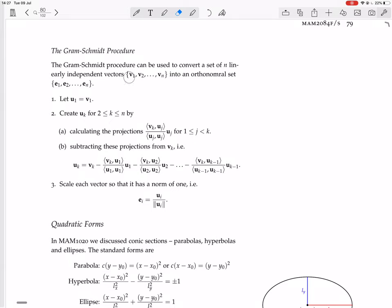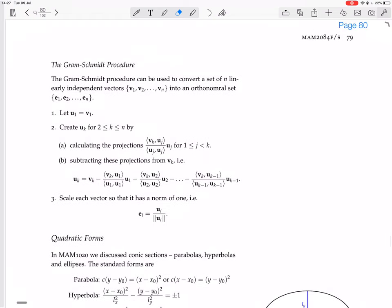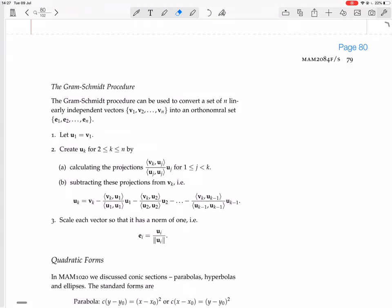Okay, take a set of n linearly independent vectors and turn them into an orthonormal set. Now here's the whole procedure, but I can never remember the procedure, so I always want to have to invent it from first principles myself, and I find that to be easier and nicer than remembering it, so let's do that.